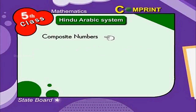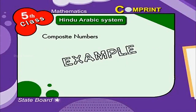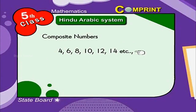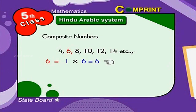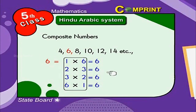Composite numbers: the numbers which have more than two numbers as factors are called composite numbers. For example, 4, 6, 8, 10, 12, etc. For the number 6: 1×6=6, 2×3=6, 3×2=6, 6×1=6. So these are the factors of number 6.